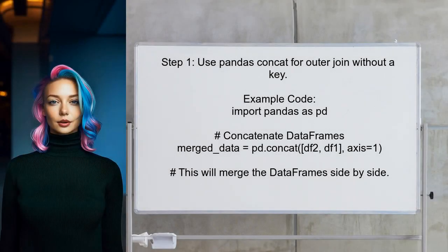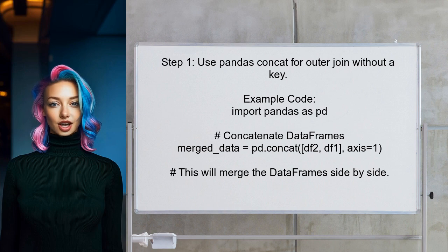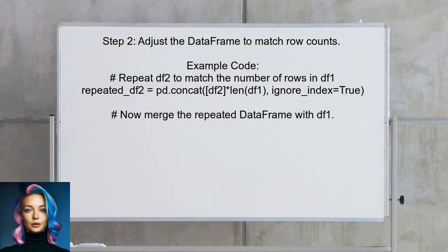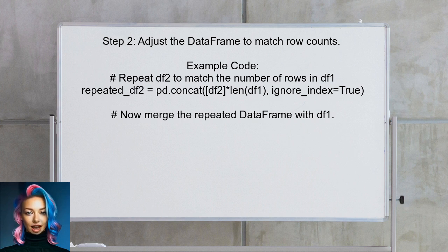To achieve the desired outer join effect in pandas without a key, the user can utilize the pandas concat function. This function allows for concatenating data frames along a particular axis. Next, the user should ensure that the resulting data frame has the correct number of rows. Since the user wants to replicate the outer join behavior, they need to repeat the rows of the second data frame to match the number of rows in the first data frame.